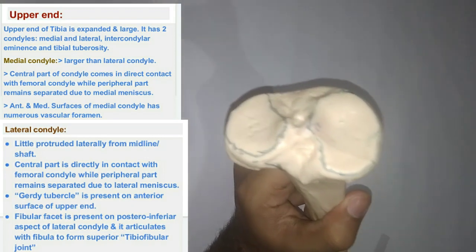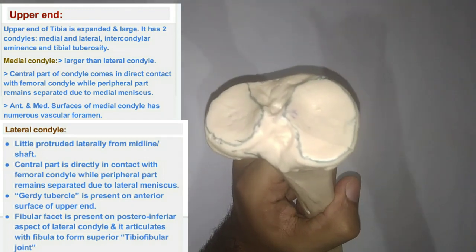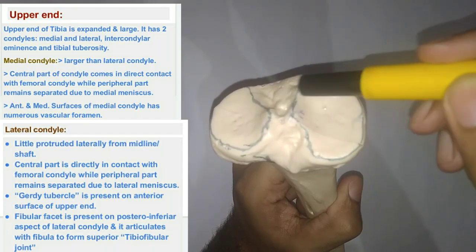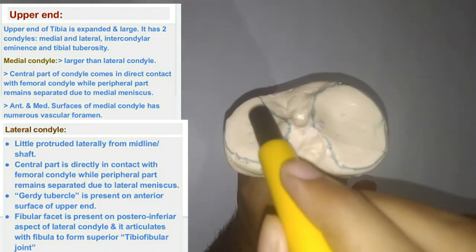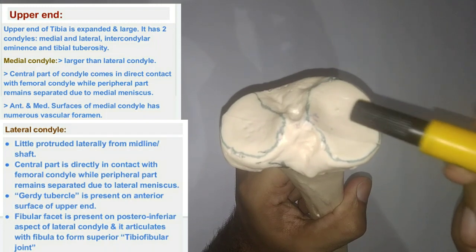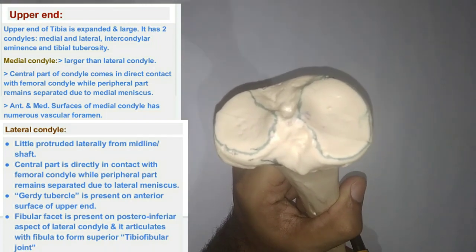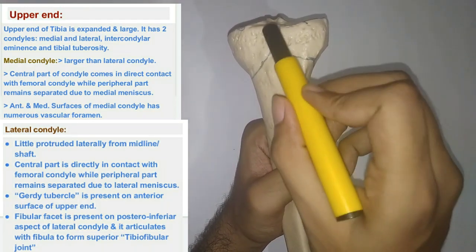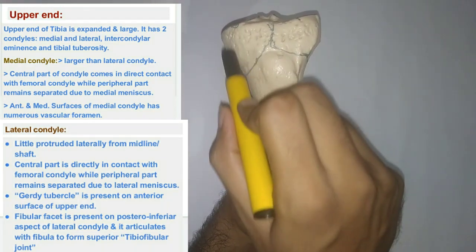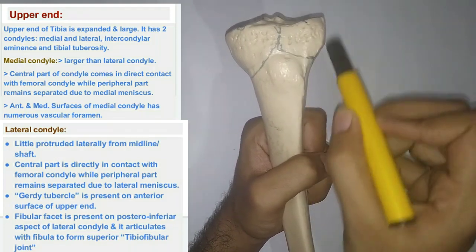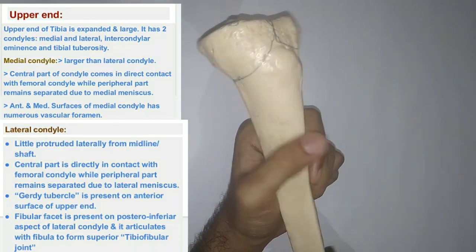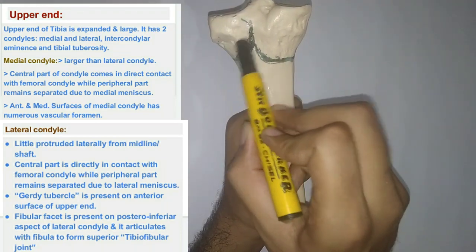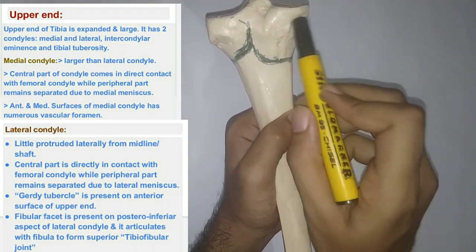Now, how do we differentiate between the medial and lateral condyles? The medial condyle is a little bigger than the lateral condyle. In the anterior view, you can see that this area looks larger than the other side. In the posterior view as well, you can see this area is smaller compared to the other side, so that larger area must be the medial condyle.